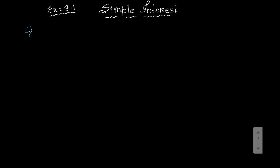Find the simple interest on rupees 4000 at 7.5 percent per annum. So here principal P equals 4000, and rate of interest R equals 7.5 percent, for three years three months.